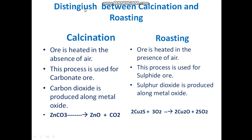Now, students, we can distinguish between calcination and roasting. In calcination, the ore is heated in the absence of air, and this process is used for carbonate ores. In roasting, the ore is heated in the presence of air, and this process is used for sulphide ores. In calcination, carbon dioxide is produced along with the metal oxide. In roasting, sulphur dioxide is produced along with the metal oxide.